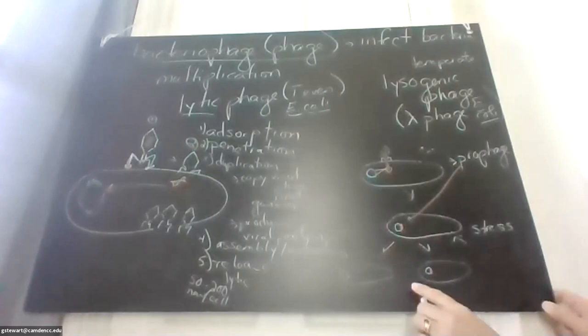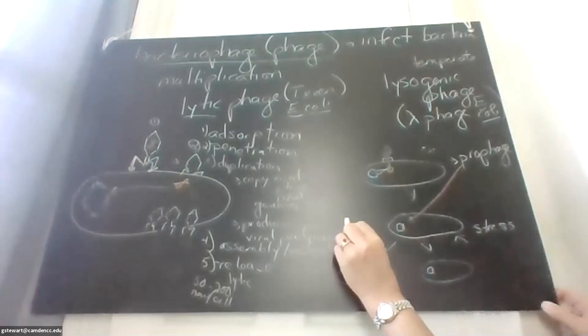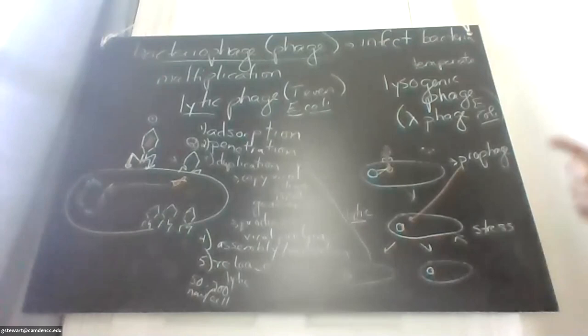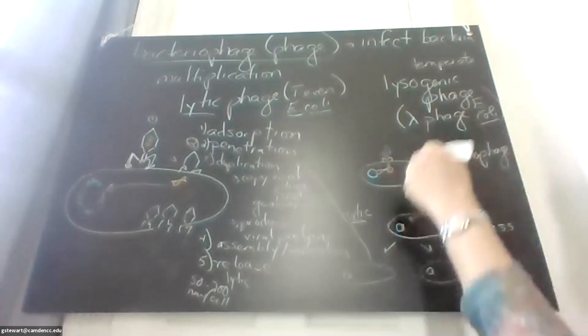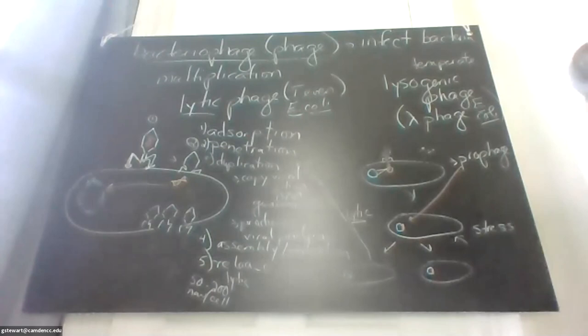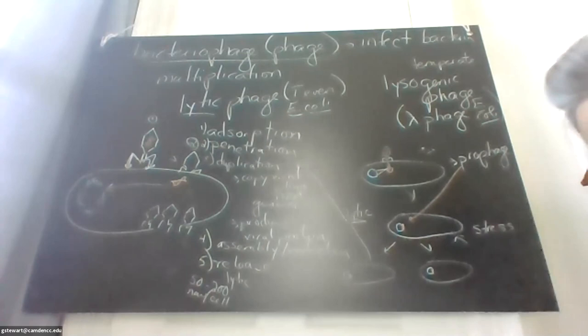The reason we go through both types is that animal viruses are the same. Some are lytic — they infect your cell and lyse it. Others integrate into the DNA, like viruses that cause cancer, or like HIV, which integrates and lies dormant for a while before acting. So understanding lytic versus lysogenic bacteriophage cycles is foundational to understanding animal virus behavior.